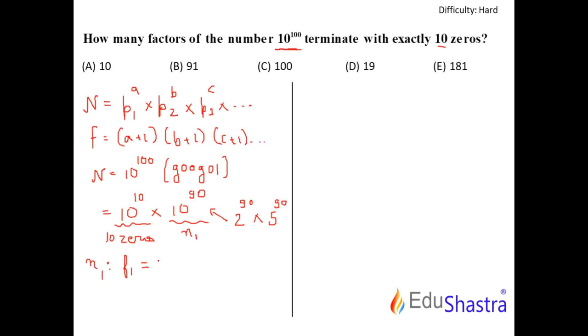So number of factors here are 91 into 91, directly writing 91 square. So these many factors are there which end with, well, the number of factors are, let's say Z are the number of zeros, that is greater equal to 10. That is what I have obtained.